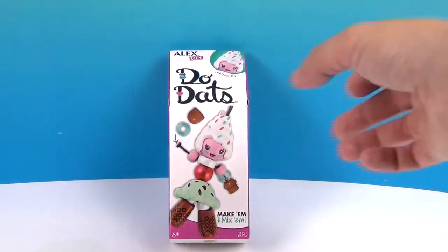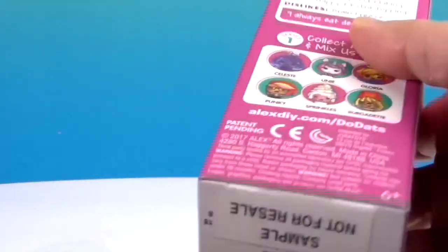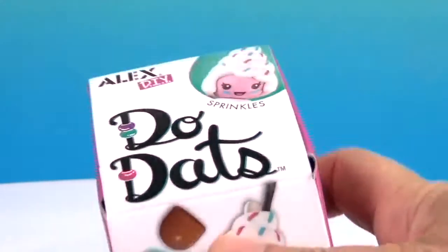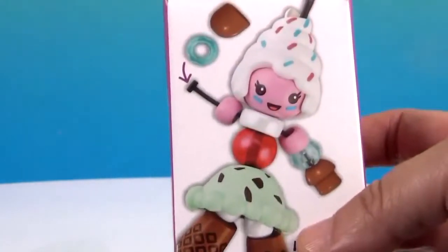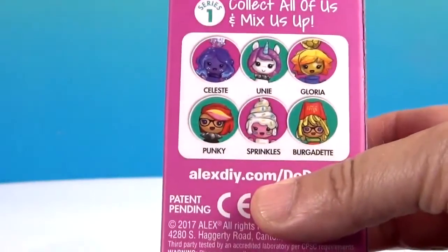I love the name of them. Make them and mix them. So there are other kinds you can get as well. It tells you exactly which one you're going to get up here. So this is Sprinkles and we're going to build this look. She's mint chocolate chip my favorite. And she's got Sprinkles all over her which is my favorite ice cream topping.